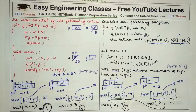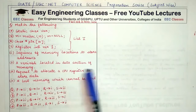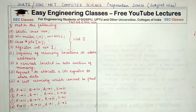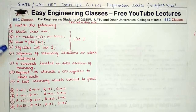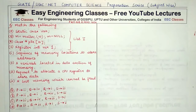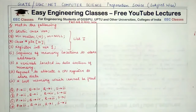The third question asks you to match options in list one to options in list two. List one gives options P, Q, R, S: static char variable var; m = malloc(10) then m = null; char* ptr[10]; and register int var1. You have to match them to descriptions in the second list. In programming, you need to be thorough with the concepts of different keywords.